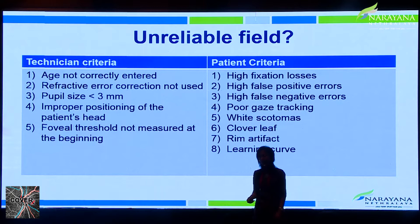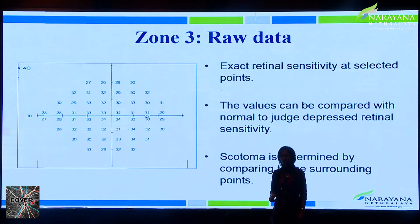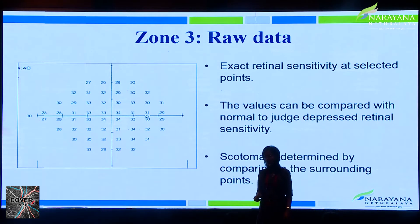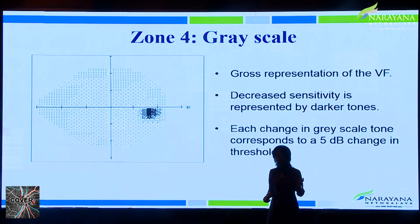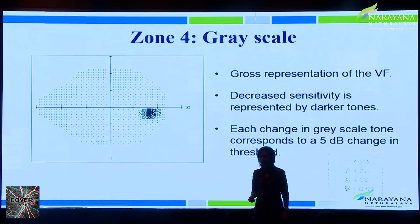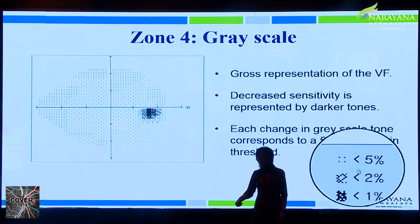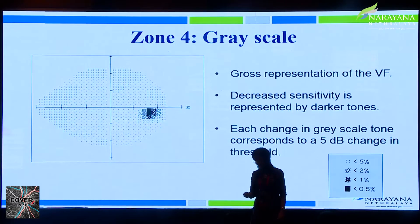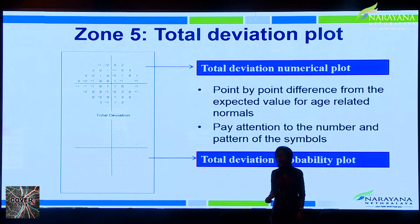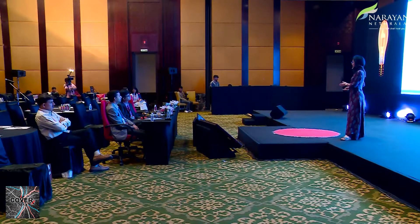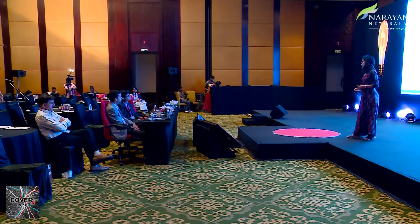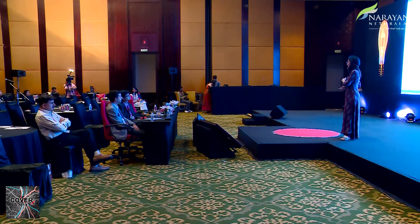Zone 3 is the raw data, showing threshold sensitivity at each point as numbers and a grayscale, which corresponds to those numbers and shows deviation from the normative database — the darker the point, the more abnormal. The total deviation plot is a point-by-point difference from expected values for age-related normals. The machine compares each point against age-related normals and gives a numerical plot above and a grayscale below, helping you understand how different each point is from the database.